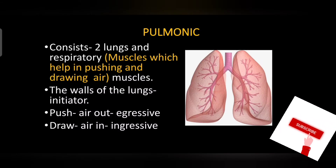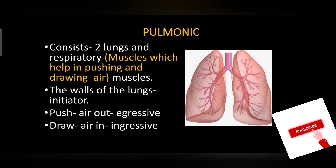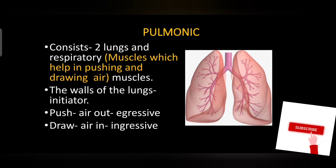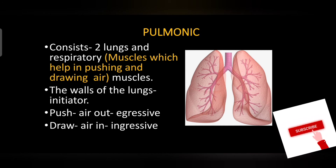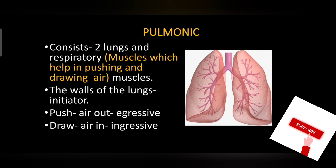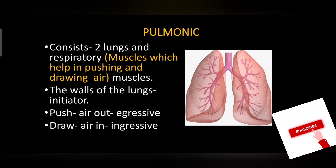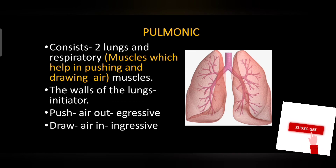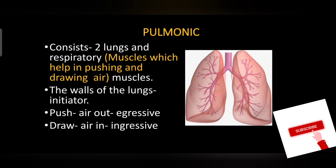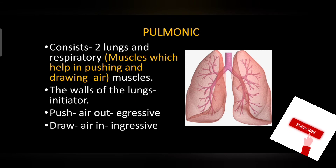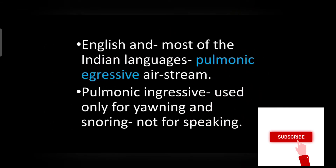The first one is the pulmonary airstream mechanism. In this mechanism, the lungs and respiratory muscles are involved. Respiratory muscles are the muscles which help for breathing. The walls of the lungs will be the initiator for this airstream. There are two processes: pulmonary egressive, that is pushing out the air, and pulmonary ingressive, which is the process of breathing in. In English and in most Indian languages, we have the pulmonary airstream mechanism. Pulmonary ingressive is used only for yawning and snoring, not for speaking.